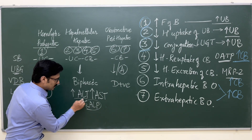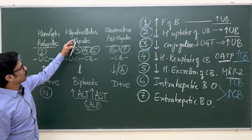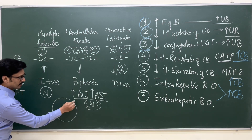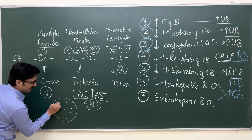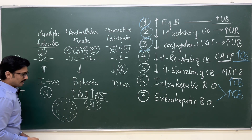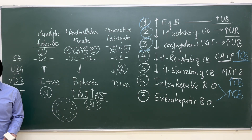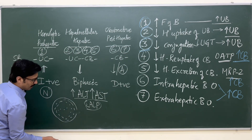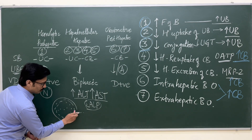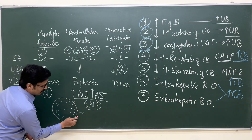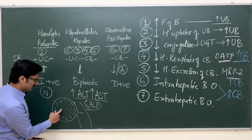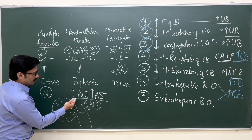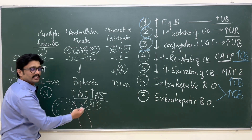Why is there an increase in these two transaminases in case of hepatocellular damage? Consider a liver cell — these are cytosolic enzymes present in the cytoplasm. If the cell membrane is broken down during hepatocellular damage, these cytosolic enzymes will leak into the liver sinusoids and can enter the systemic circulation. So the blood levels of these two enzymes increase in case of hepatocellular damage.